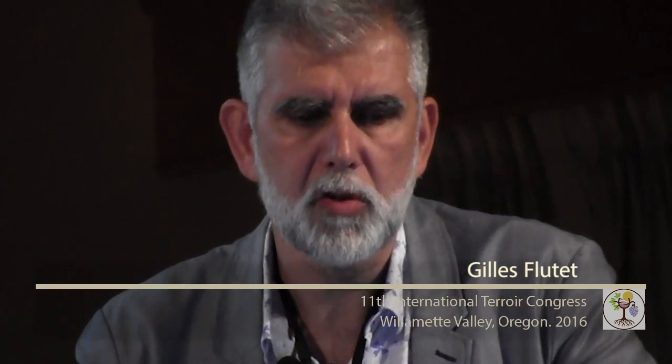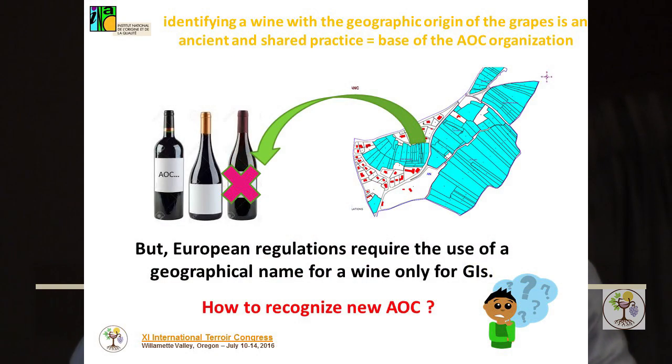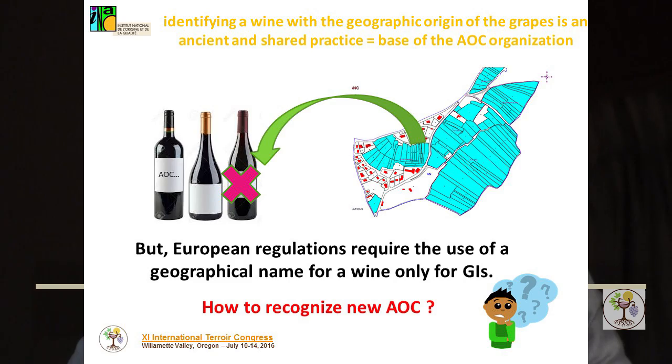Identifying a wine with the geographic origin of the grape is an ancient and established practice. It is the base of AOC organization. Name notoriety is an important criterion for the recognition of AOC. However, European regulation requires the use of a geographical name for wine only for geographical indications.